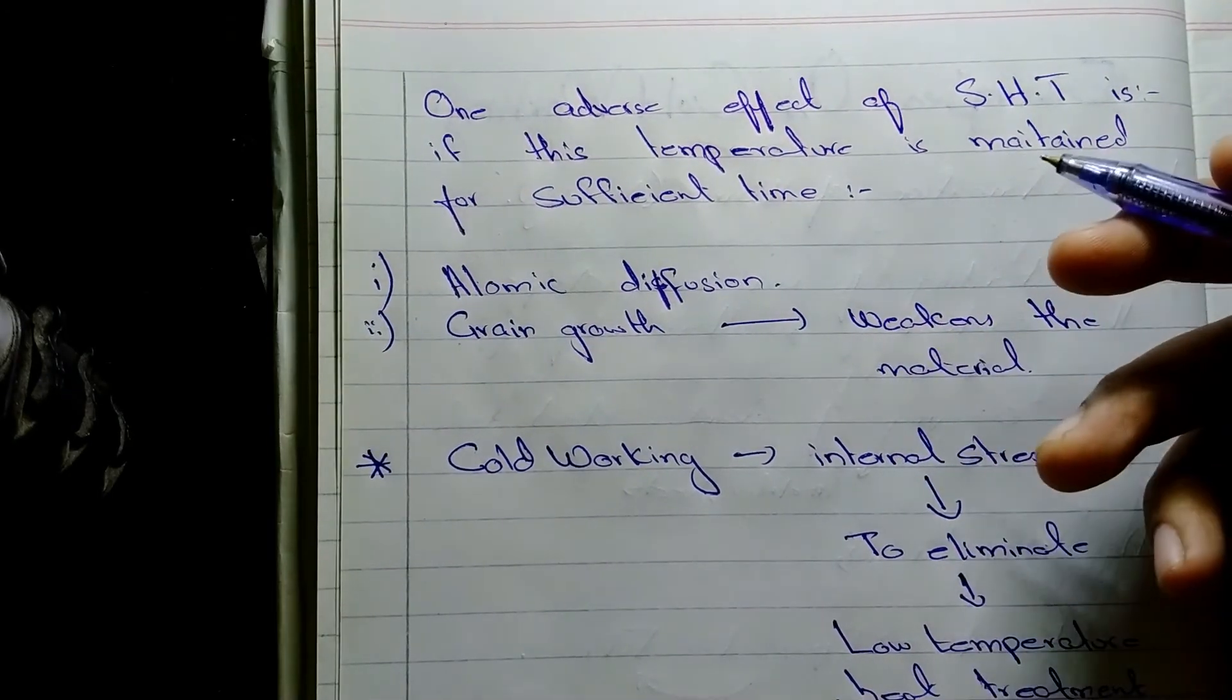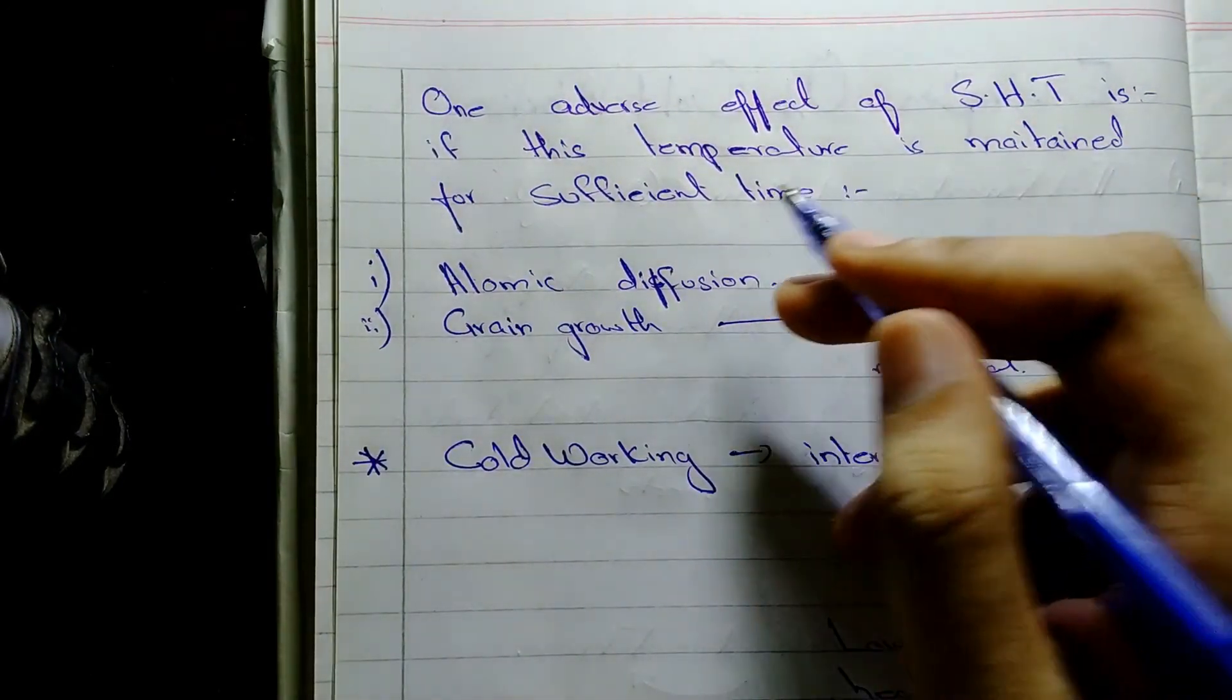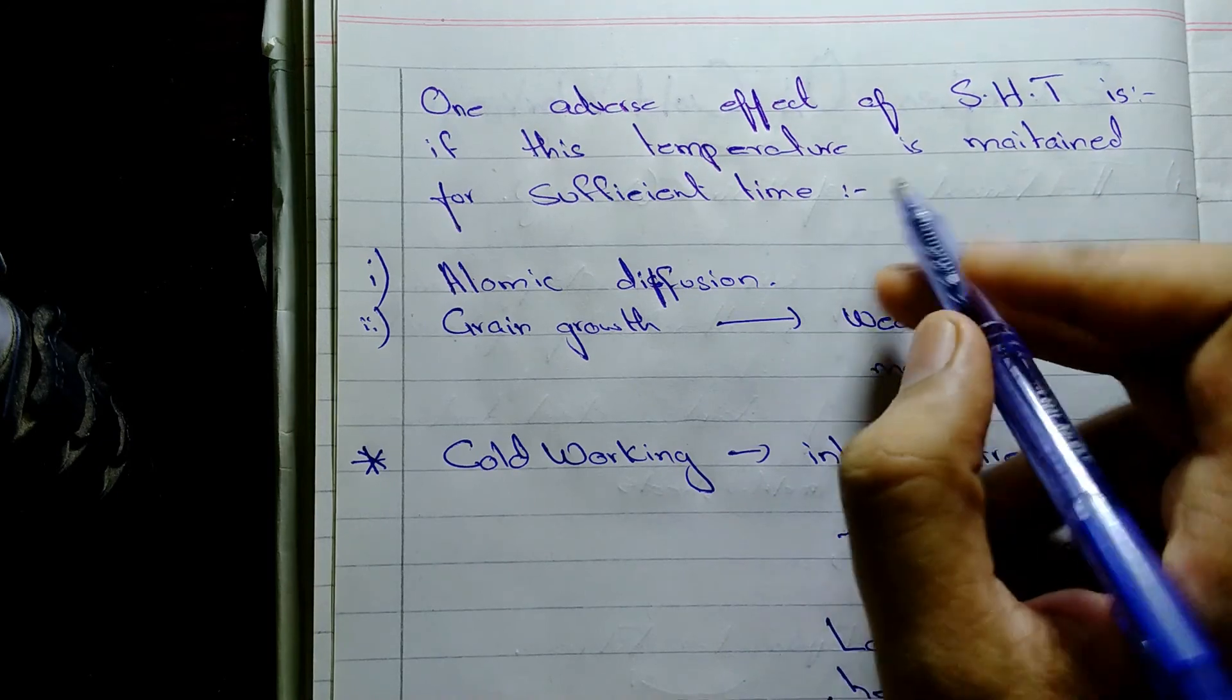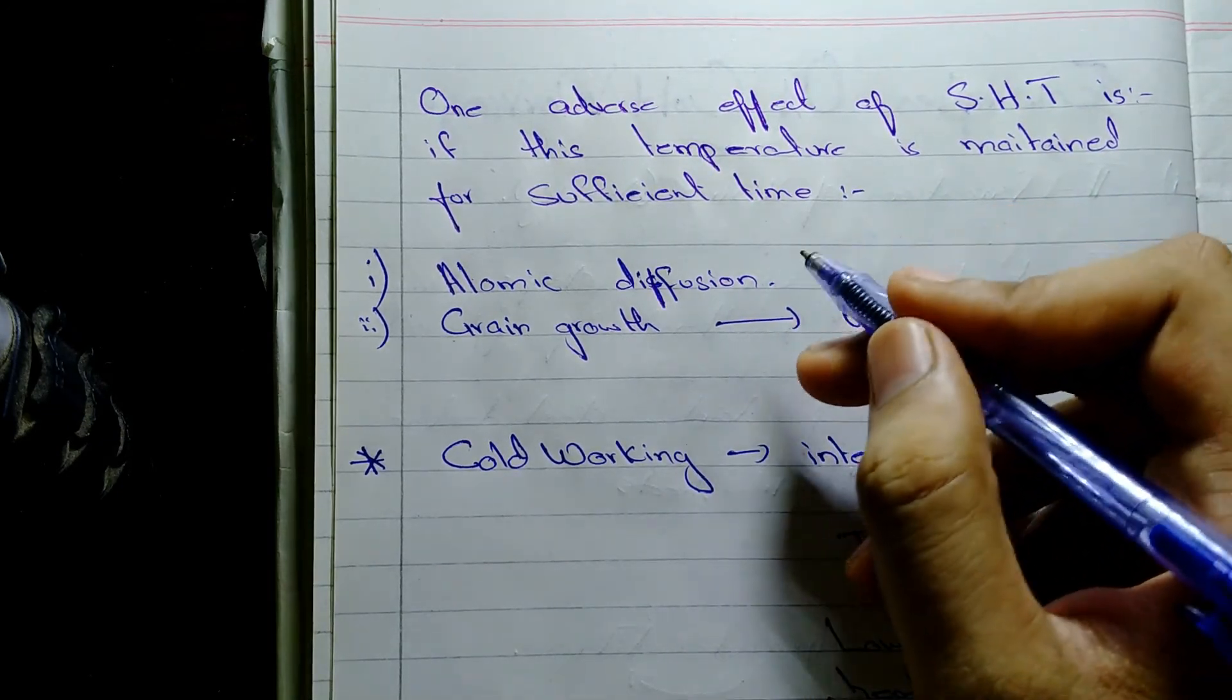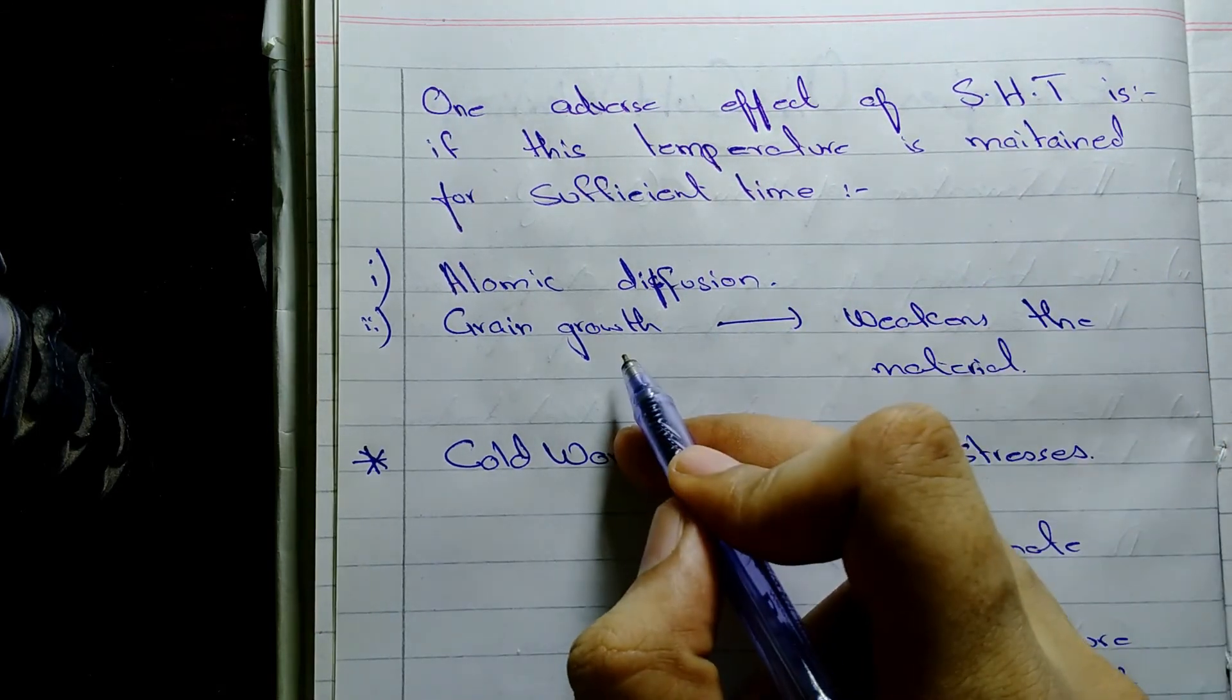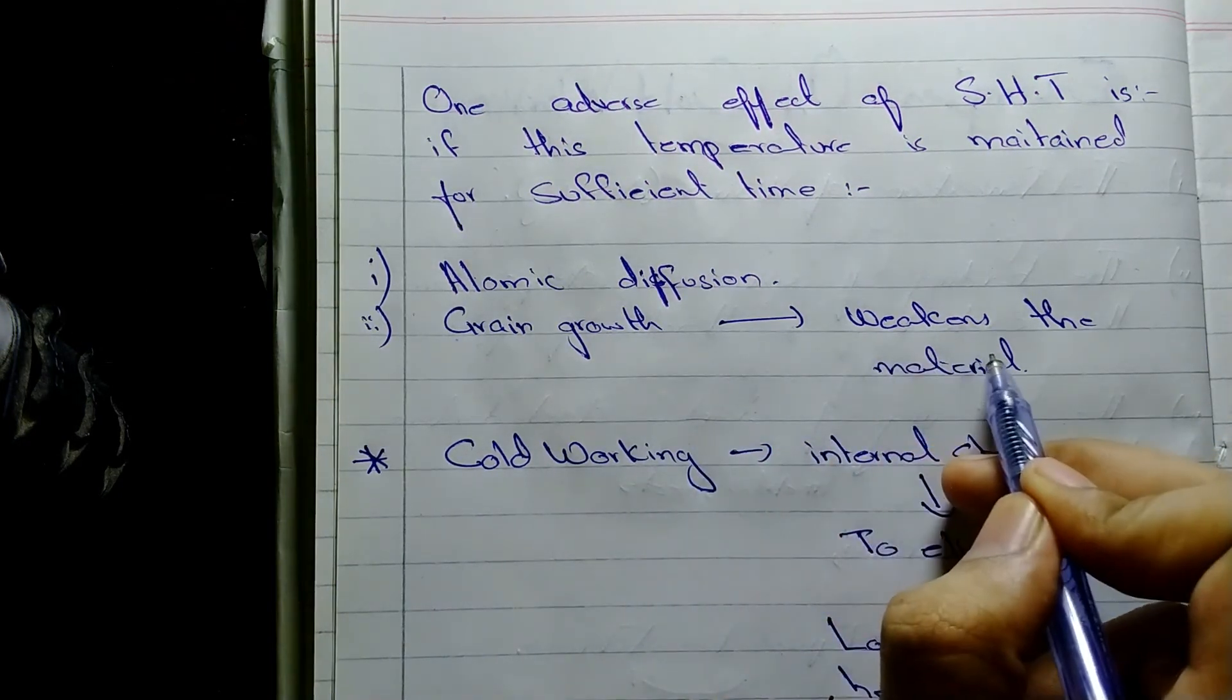But the softening heat treatment has one adverse effect. If this temperature, the temperature above the recrystallization temperature is maintained for sufficient time, then what happens is atomic diffusion occurs, which will lead to grain growth. As we know that coarser the grain, the weaker the material.